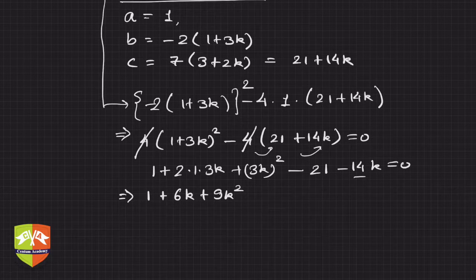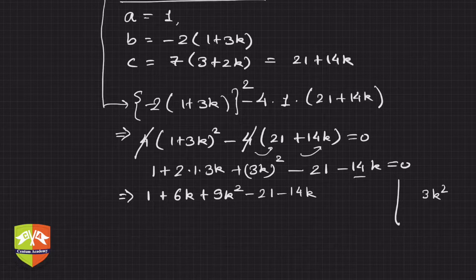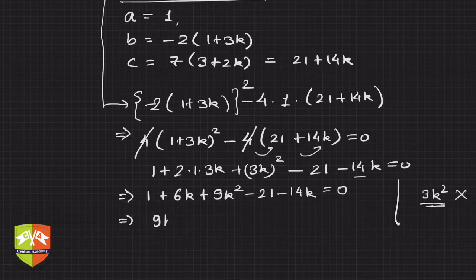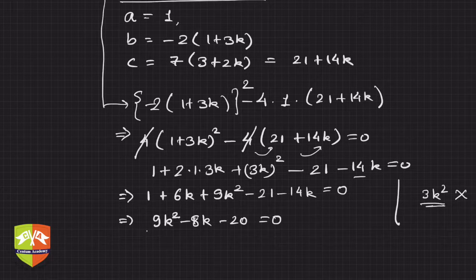Note that 3k whole squared is 9k squared — many people make the mistake of writing just 3k squared, so please be careful. Now arranging in order: 9k squared, then 6k minus 14k gives minus 8k, and 1 minus 21 gives minus 20. So we get 9k squared minus 8k minus 20 equals zero.